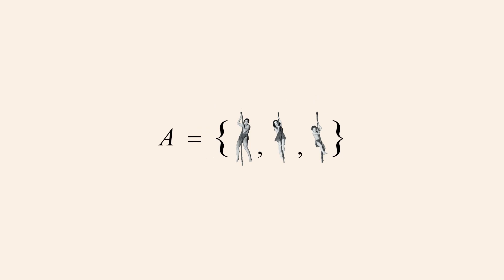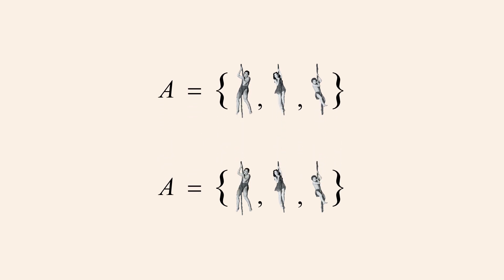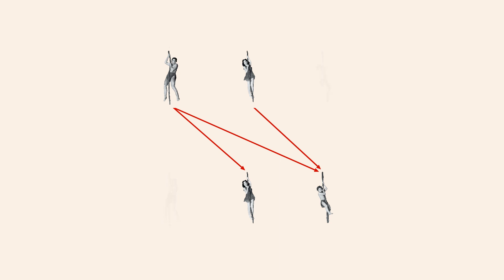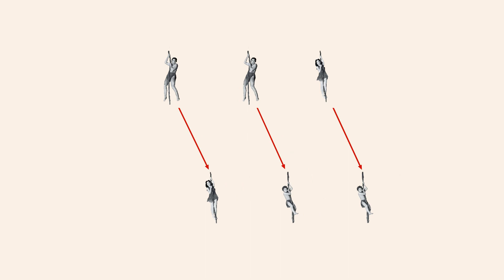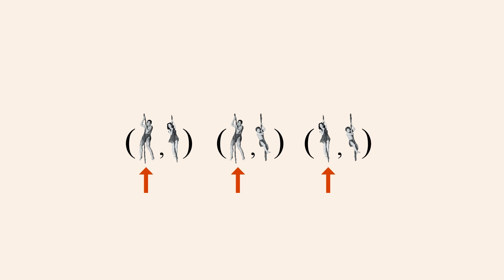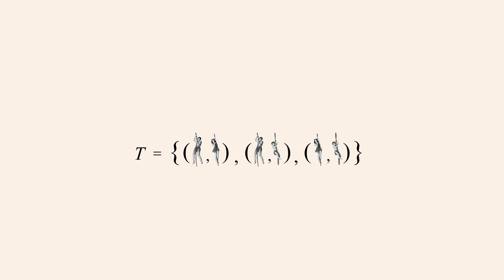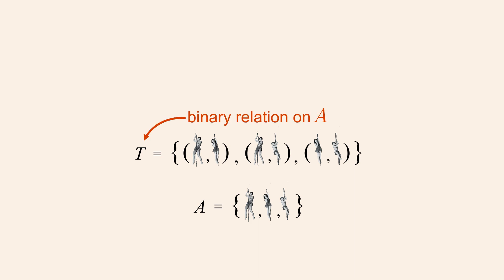Binary relations don't necessarily have to involve two different sets. A binary relation can exist between members of the same set. For example, we could take two copies of set A, which contains Tarzan, Jane, and Boy, and draw arrows from each member to every member who is shorter. So this relation is represented by three ordered pairs where the first element is the taller person and the second element is the shorter person. Let's call this relation T. Since both sets involved in this binary relation are the same set A, we call T a binary relation on set A.